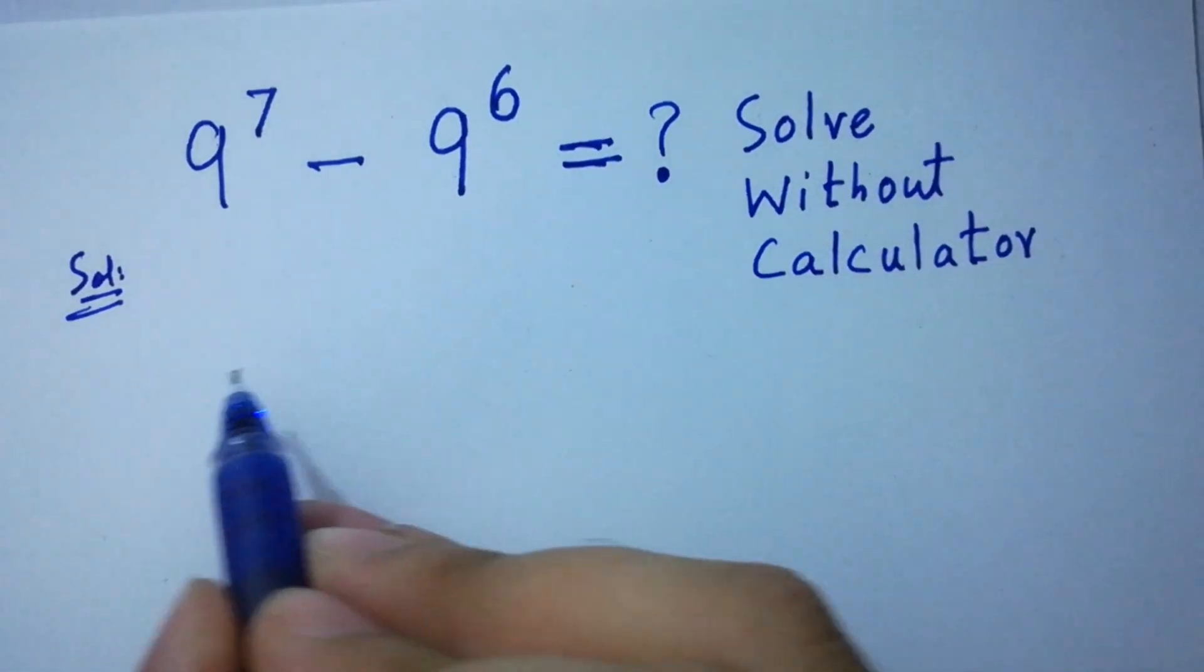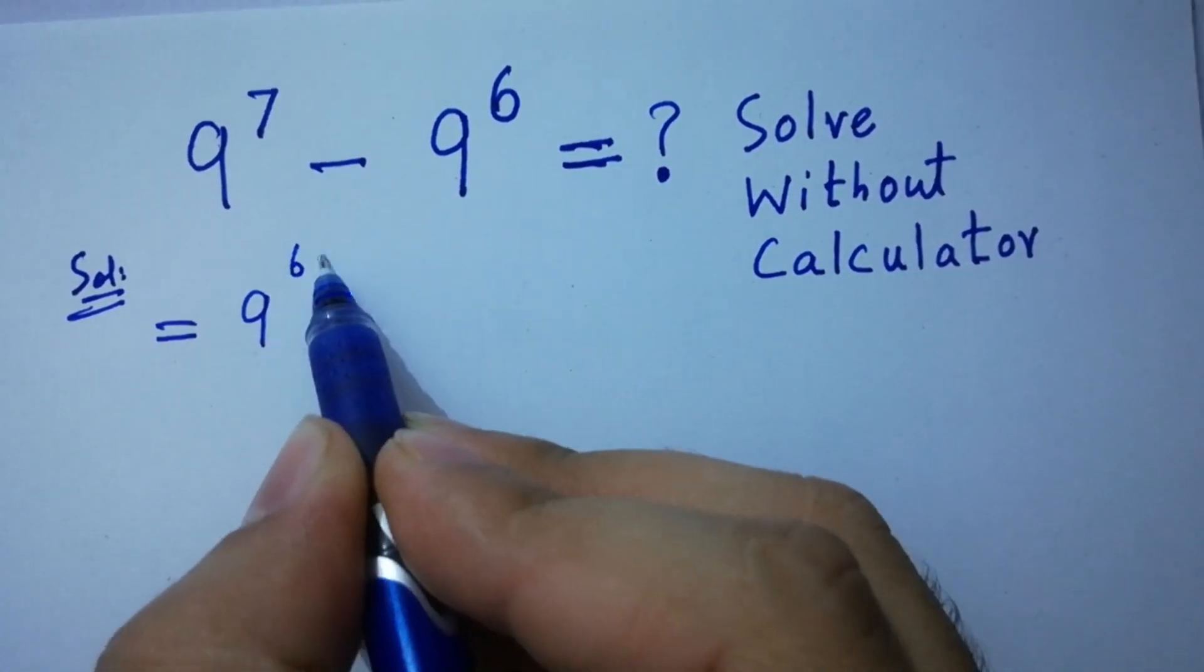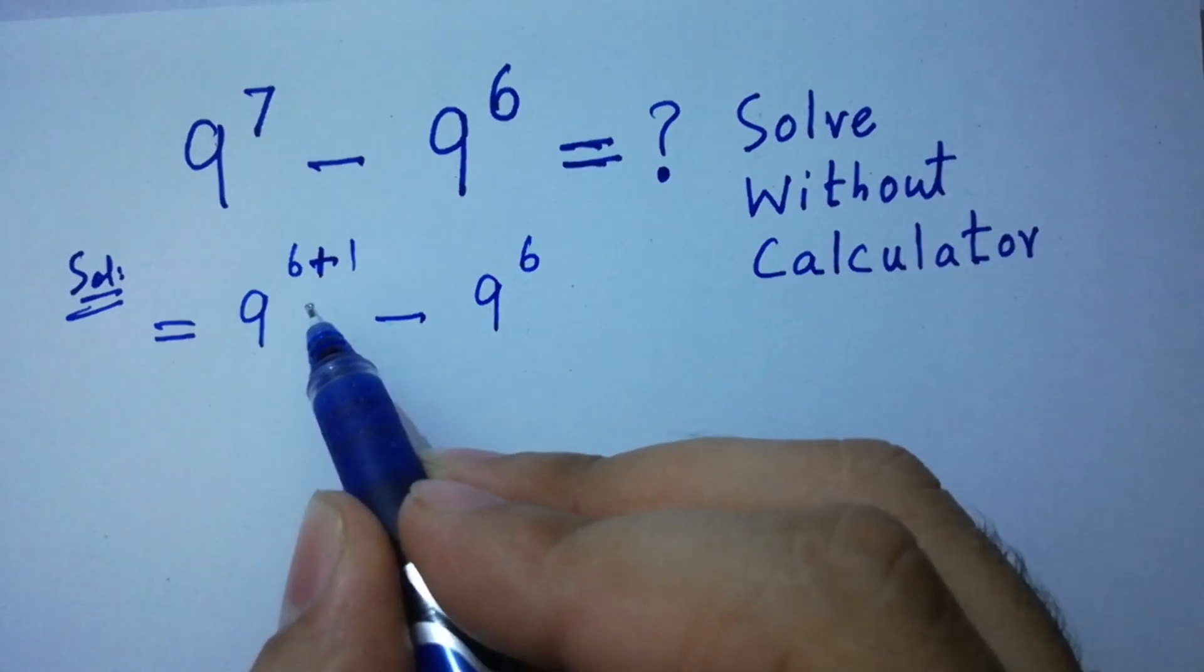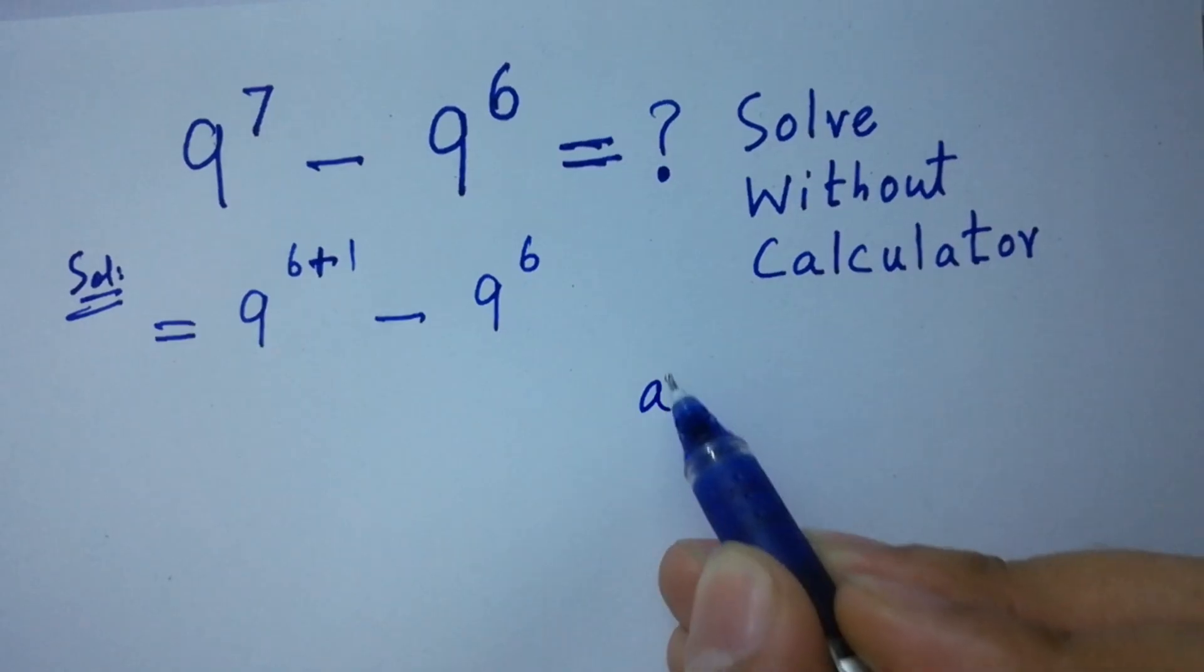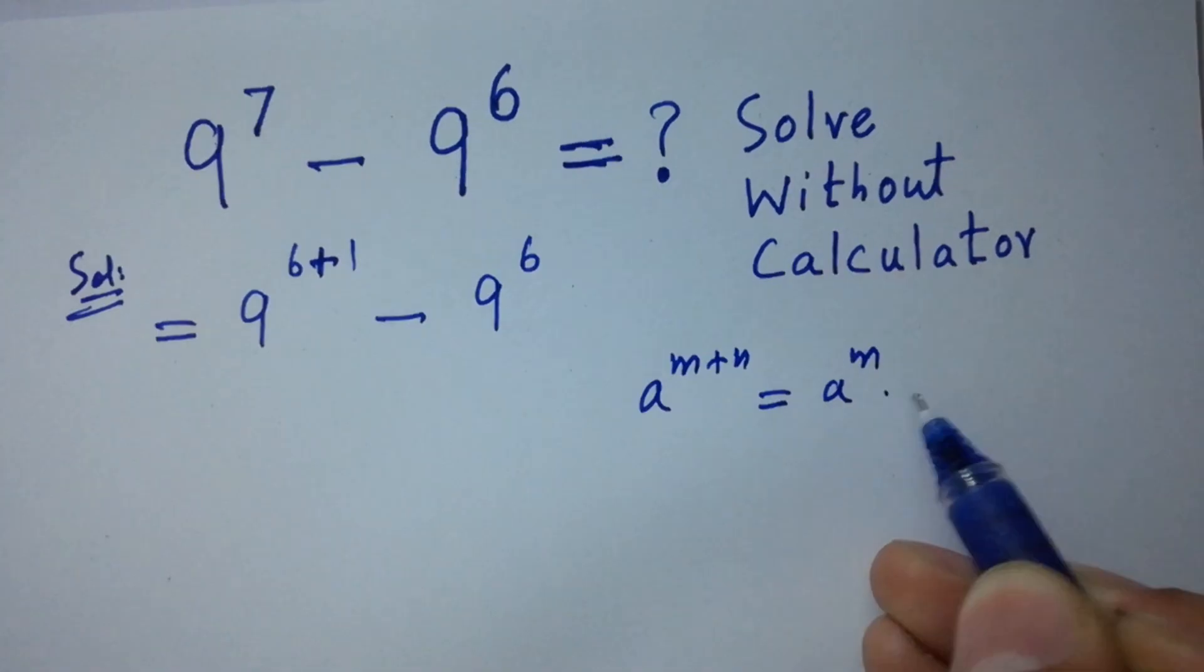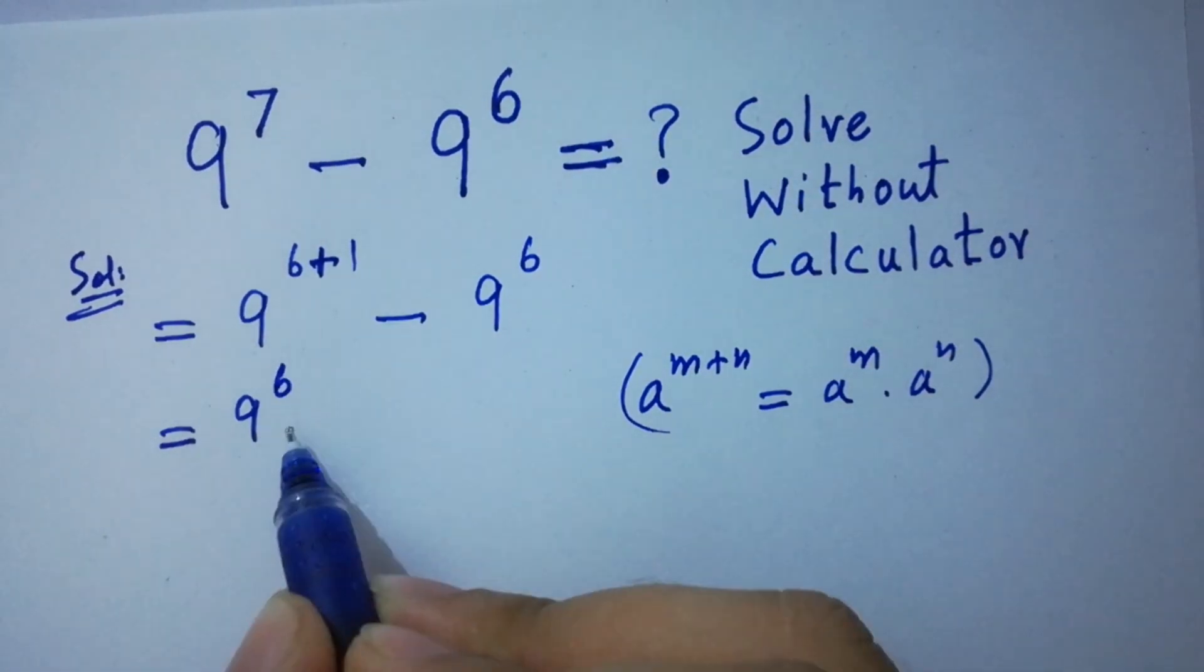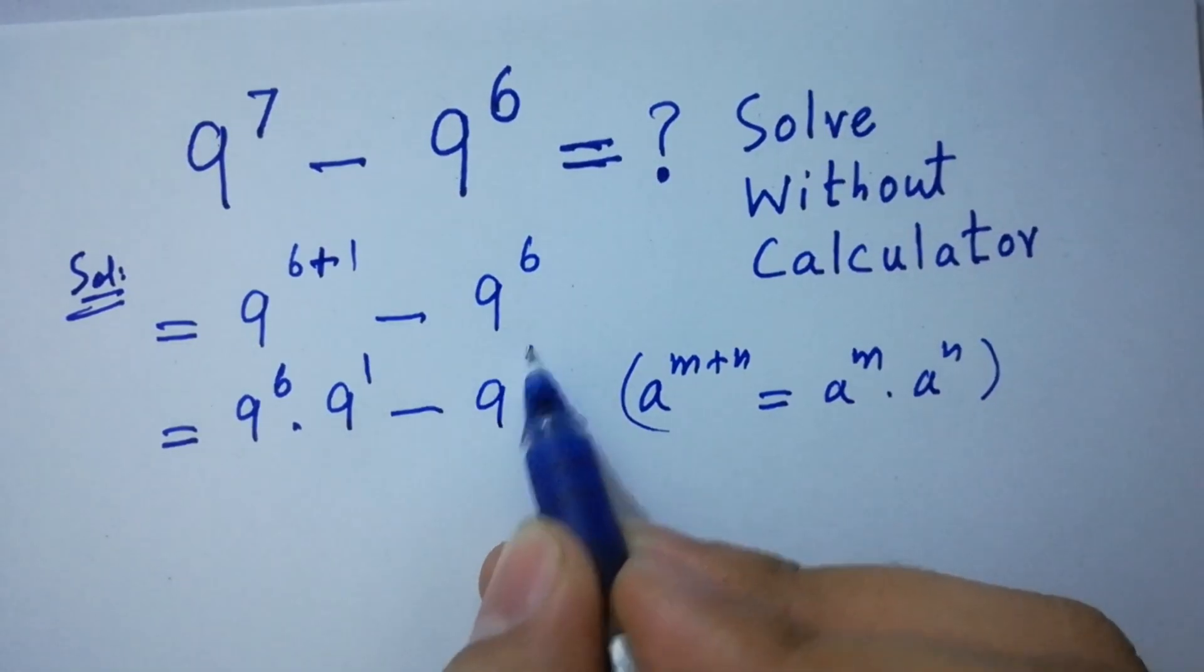Here, it can be written as 9 to the power 6 plus 1 minus 9 to the power 6 since 6 plus 1 is 7. As we know, a to the power m plus n equal to a to the power m times a to the power n. Then it will be 9 to the power 6 times 9 to the power 1 minus 9 to the power 6.